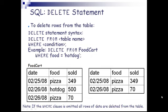DELETE statement is used to delete rows from a table. The syntax is: DELETE FROM table_name WHERE condition. Example: DELETE FROM food_cart WHERE food = 'hot dog'. In the existing table we have hot dog with sold equal to 500. When this statement is executed, that particular row will be deleted.